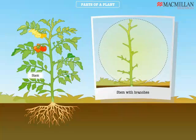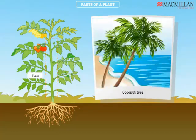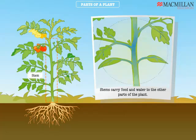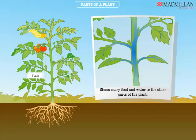What you see here, attached to the root but above the ground, is the stem. The stem has branches. Some plants, like the coconut, have just one long stem. Stems are like pipes — they carry food and water to the other parts of the plant.